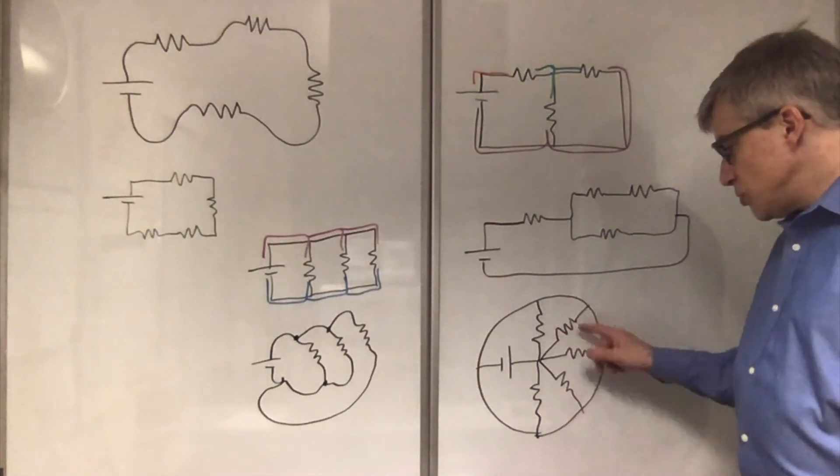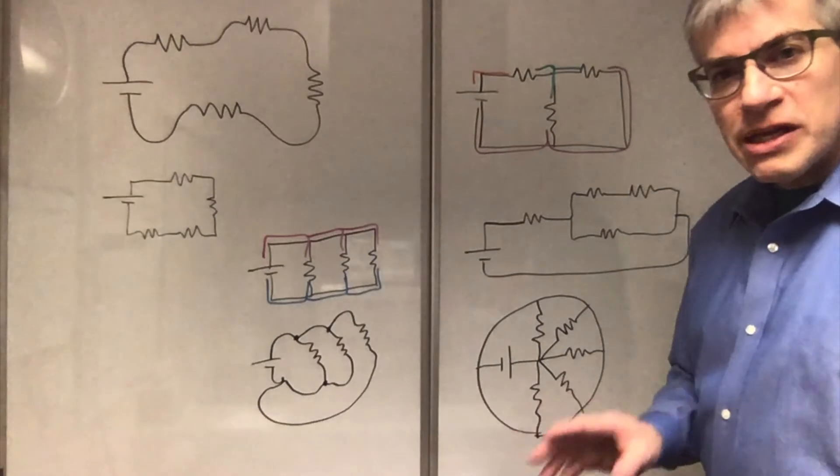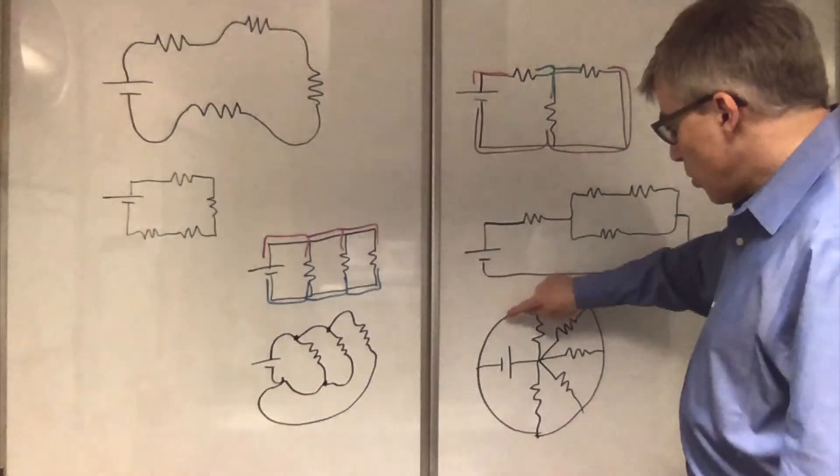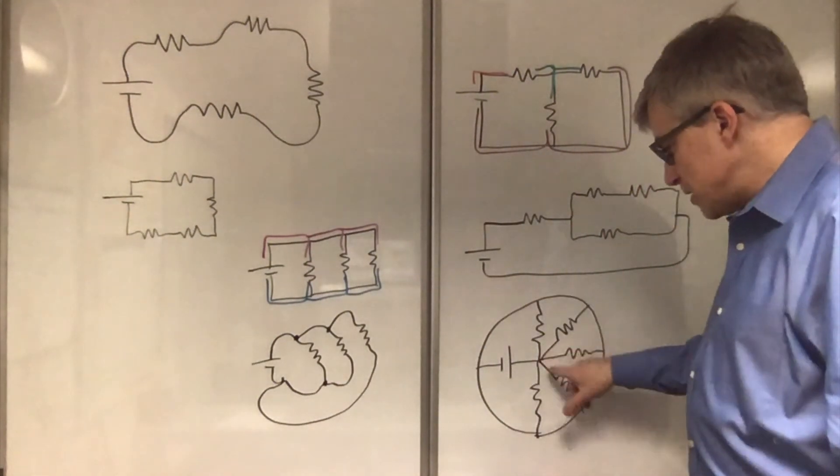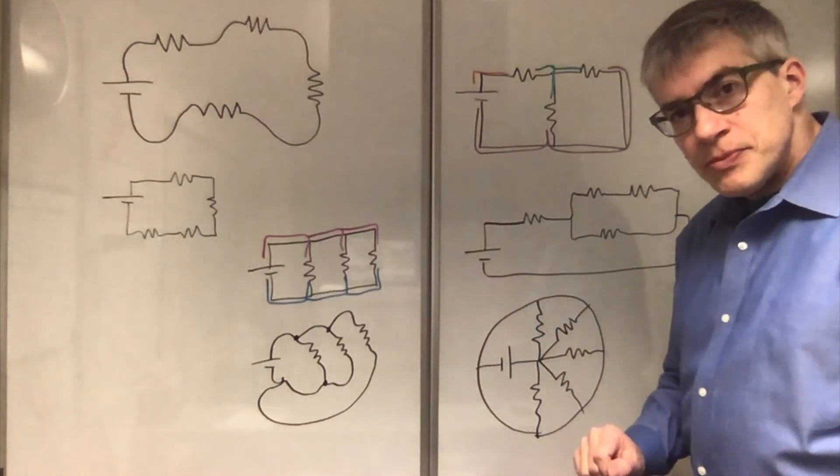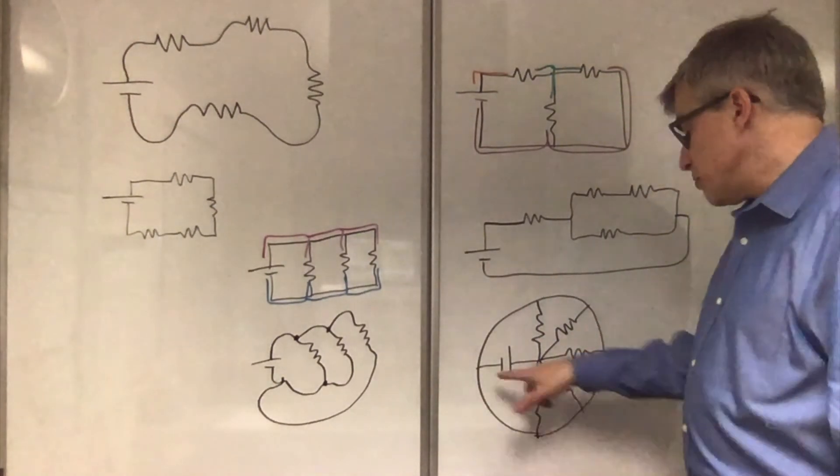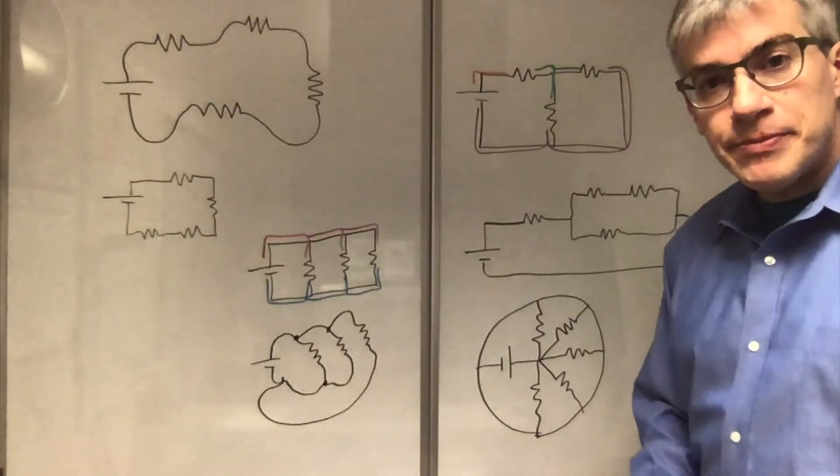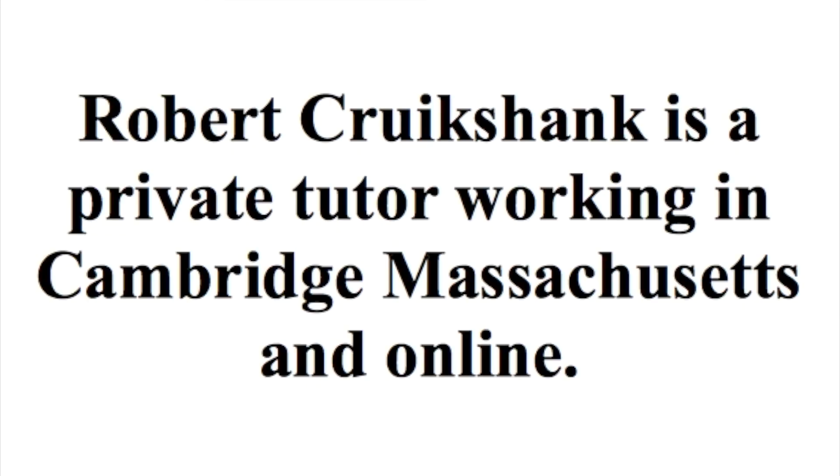All that is, is one, two, three, four, five resistors all in parallel. Because they are all connected to this piece of metal, and they're all connected to the central piece of metal. They have the same voltage across them, which happens to be the voltage of the battery.